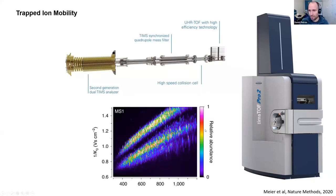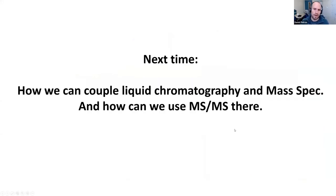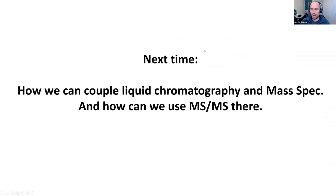This two-dimensional plot is also the perfect primer for what we'll talk about next time: how mass spectrometry is coupled with liquid chromatography, and in particular how we can use this for non-targeted metabolomics and non-targeted proteomics in combination with tandem mass spectrometry. That's pretty much all I wanted to show you today — happy to take any questions or discussions.